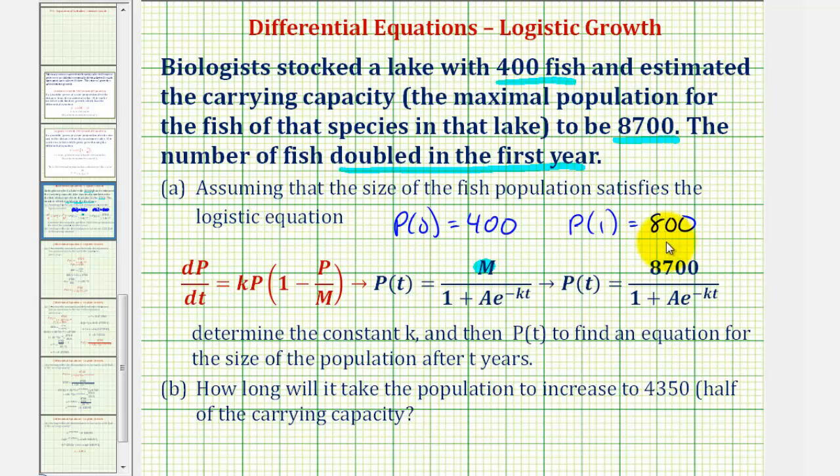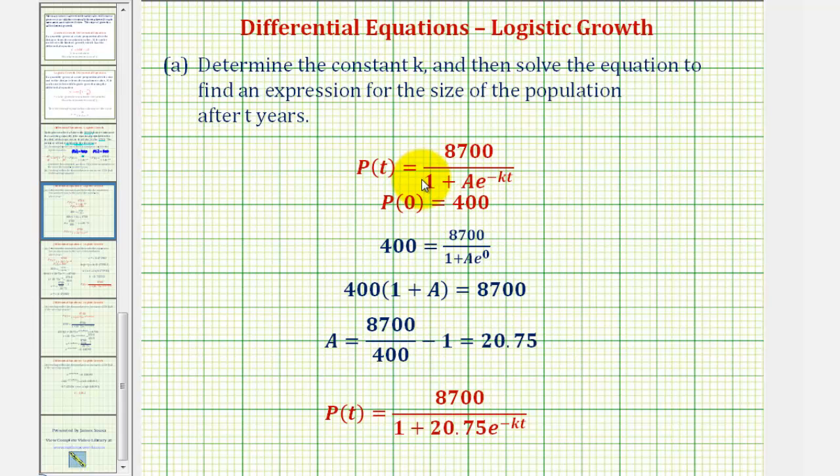Here we have P(t) with a maximum population of 8,700, and we'll use the initial condition P(0) = 400 to find A. We substitute 400 for P(t) and zero for t. This gives us 400 = 8700/(1 + A·e^0). Since e^0 = 1, to clear this fraction, we multiply both sides by (1 + A).